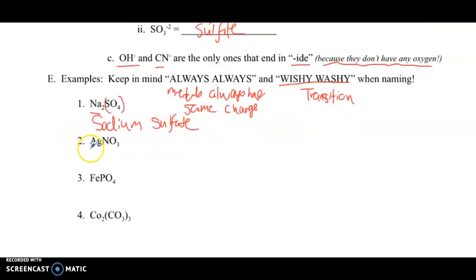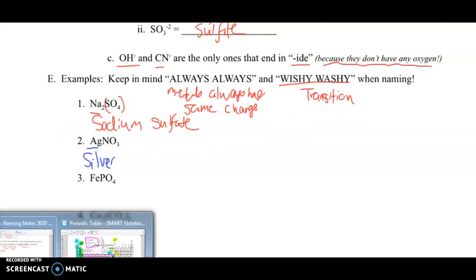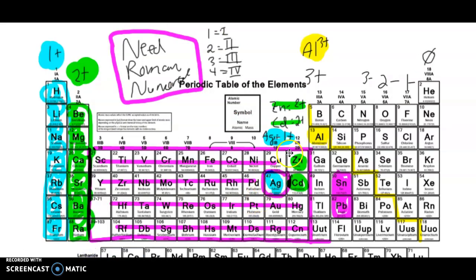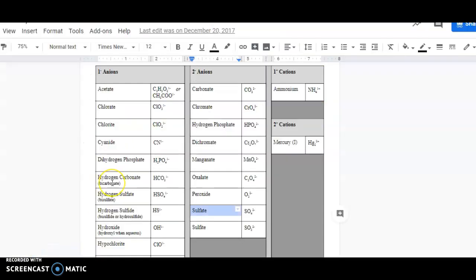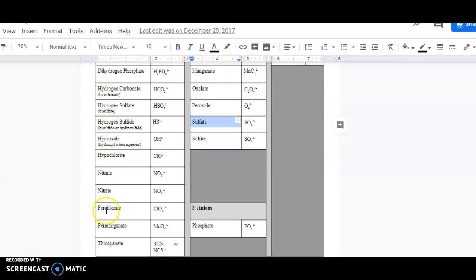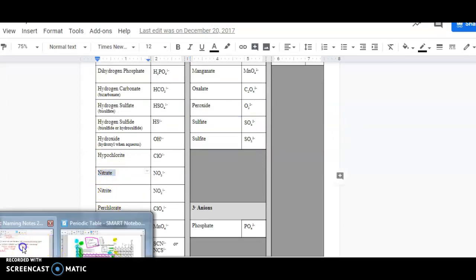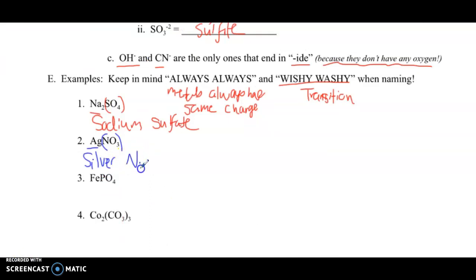Let's try our next one. Ag is silver. When you see silver, a little alarm bell should go off because you know that silver is a transition metal, but silver has an always charge of 1+. So silver does not need a Roman numeral. And then we have NO3, that's nitrate. So this name is going to be silver nitrate.